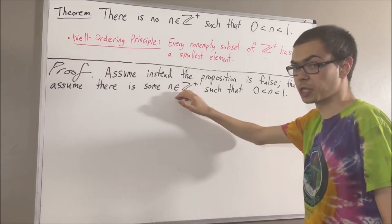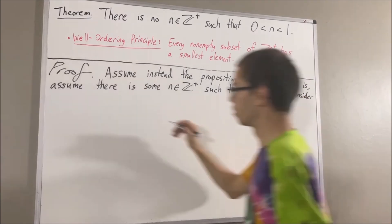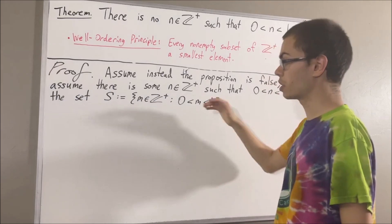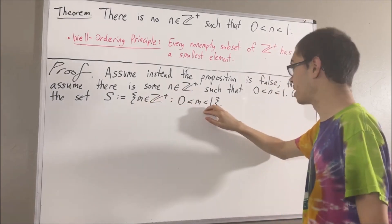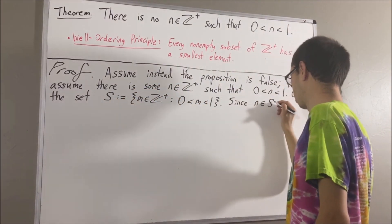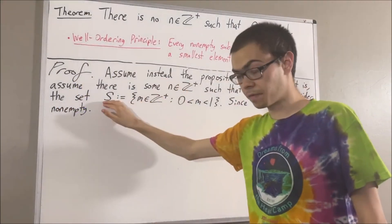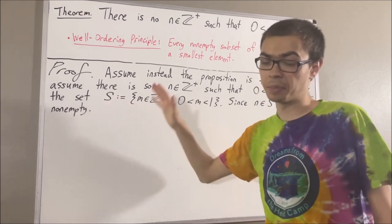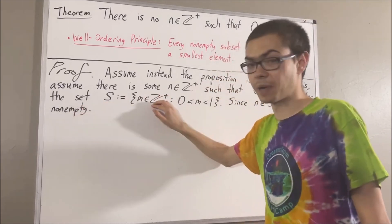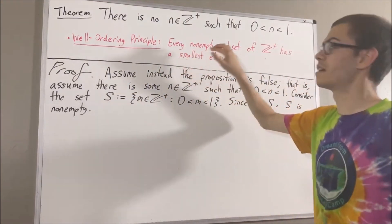Let's consider the set of positive integers which have this property — I'll call that set S. We know that there is at least one positive integer which has this property, namely n, so S is non-empty. Since every element of S is a positive integer, we know that S is a subset of the positive integers. Therefore, S is a non-empty subset of the positive integers. By the well-ordering principle, this tells us that S has a smallest element.